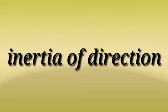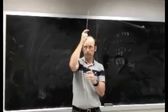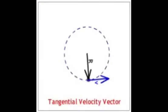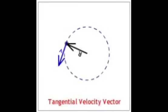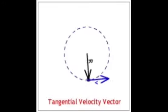The third type is inertia of direction — the tendency of a body by which it is unable to change the direction of motion unless some external unbalanced force is applied on it. For example, when a stone attached to a string is in circular motion and the string is cut suddenly, the stone will not continue to move in circular motion but will instead move tangentially to the circle. This is called inertia of direction.